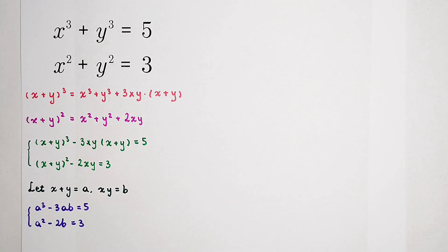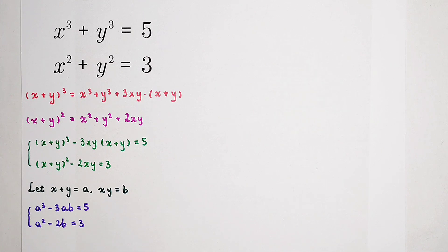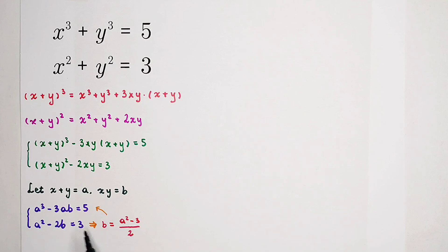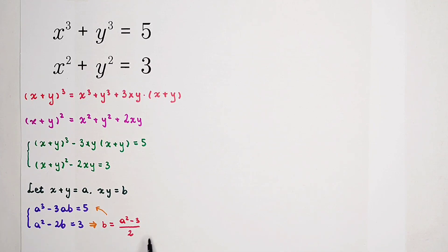From which equation should we start? Of course from the second one. From the second equation, we can get that b equals a squared minus 3, all divided by 2. Then we substitute this into our first equation to get a cubic equation in a.